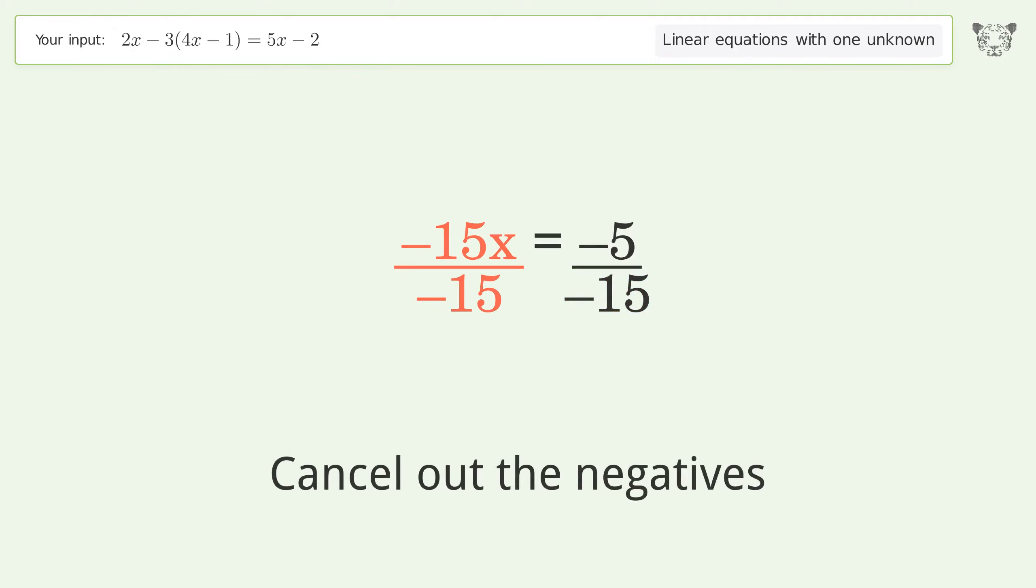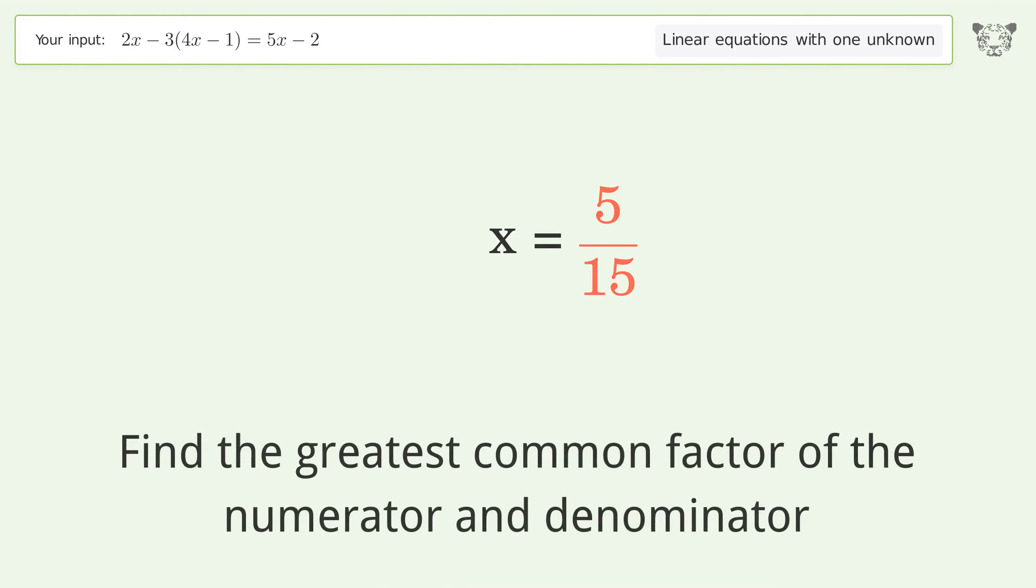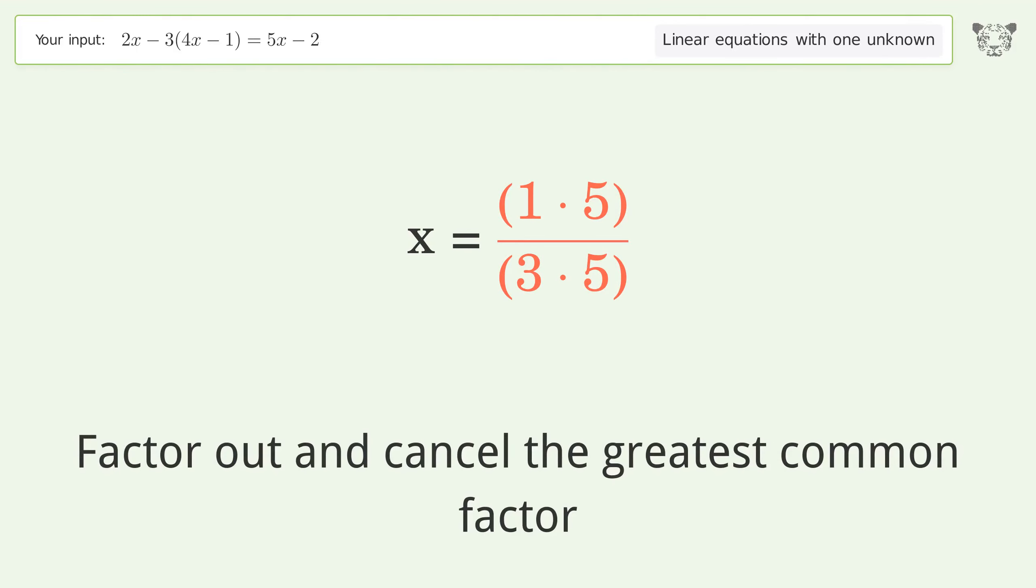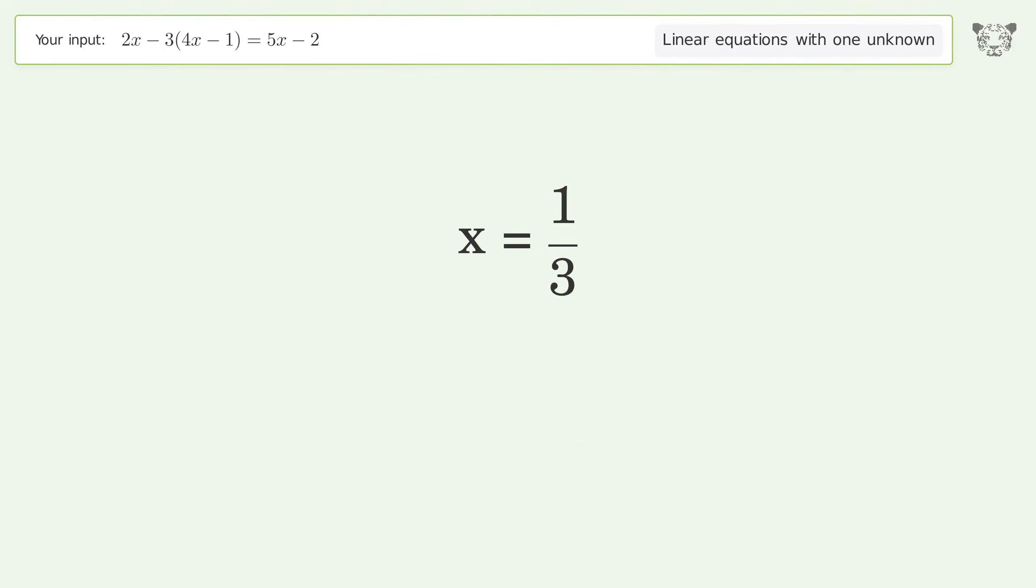Cancel out the negatives and simplify the fraction. Cancel out the negatives again. Find the greatest common factor of the numerator and denominator. Factor out and cancel the greatest common factor. And so the final result is x equals 1 over 3.